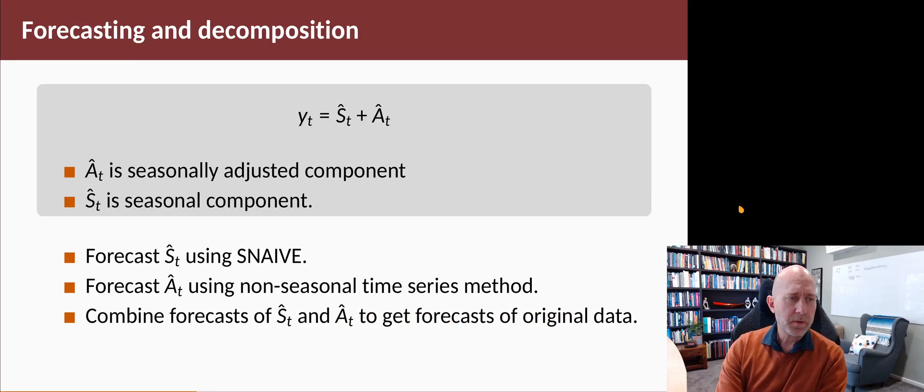You remember in Chapter 3 when we talked about time series decomposition, we split a series into three components: a trend, a seasonal component, and a remainder component. We're not going to use all three components here. We're just going to use the seasonal component and then everything else, which is the seasonally adjusted component.